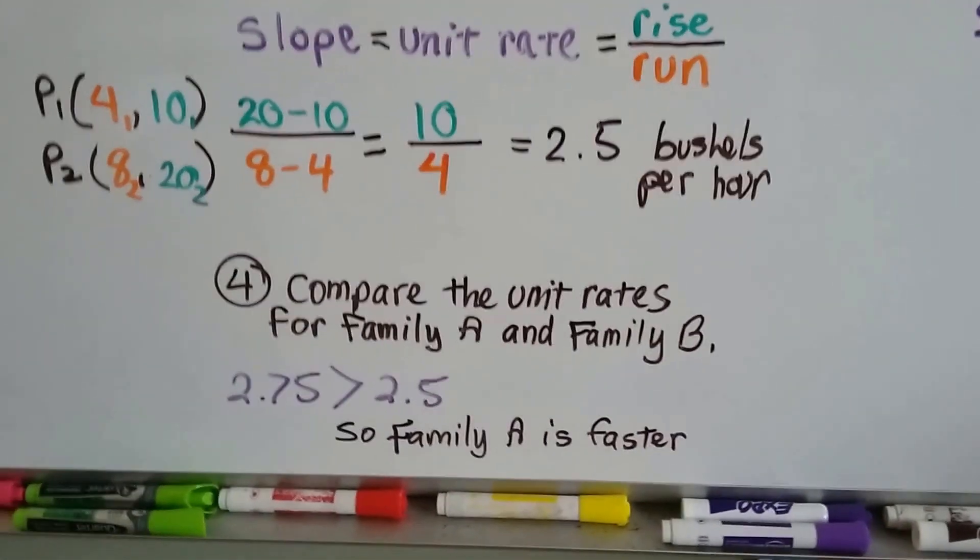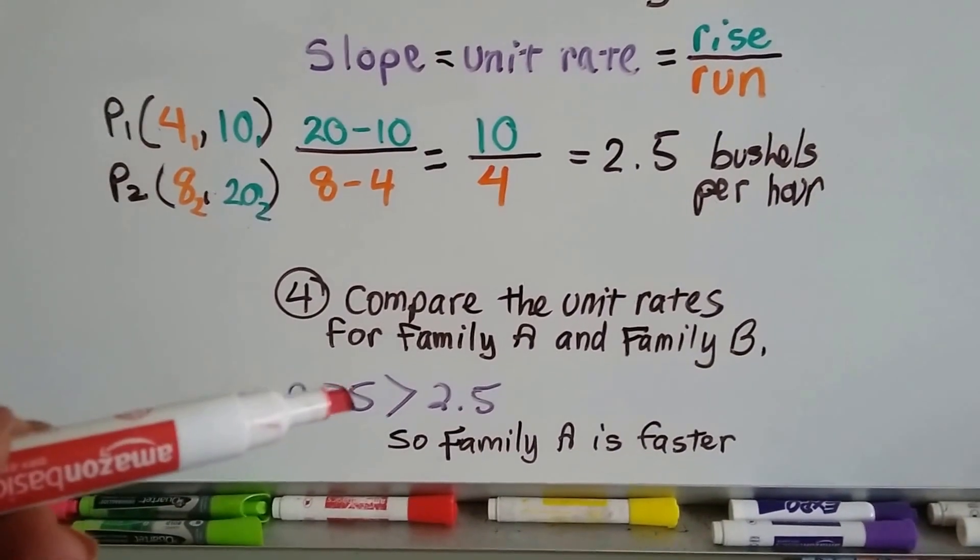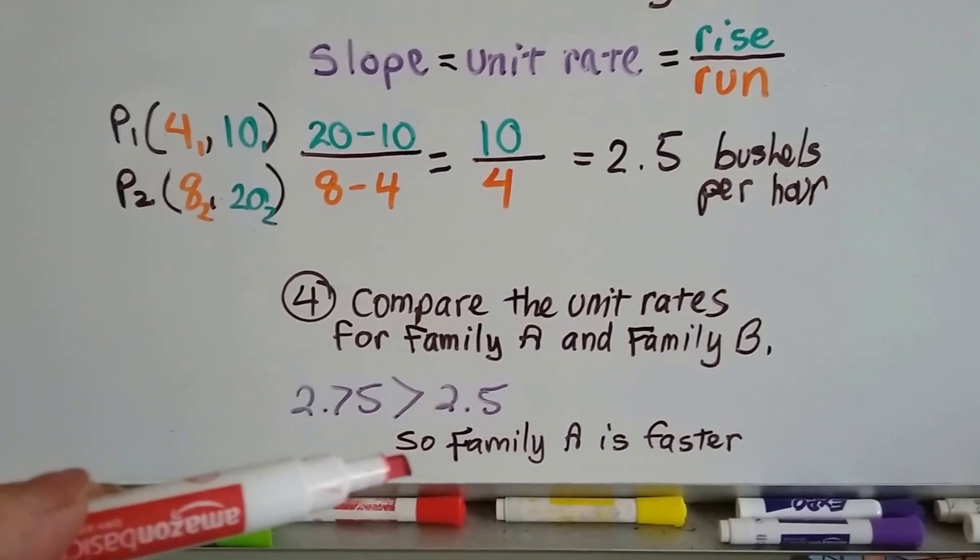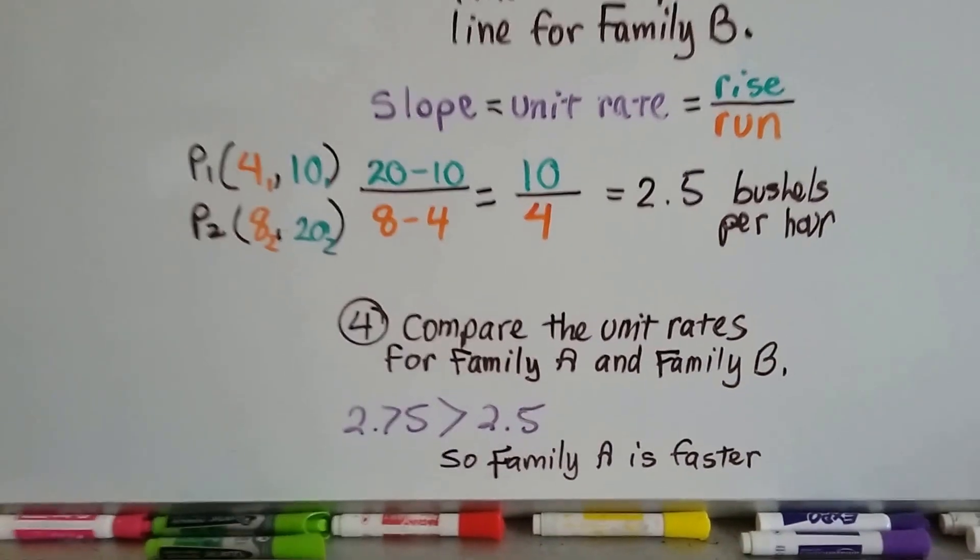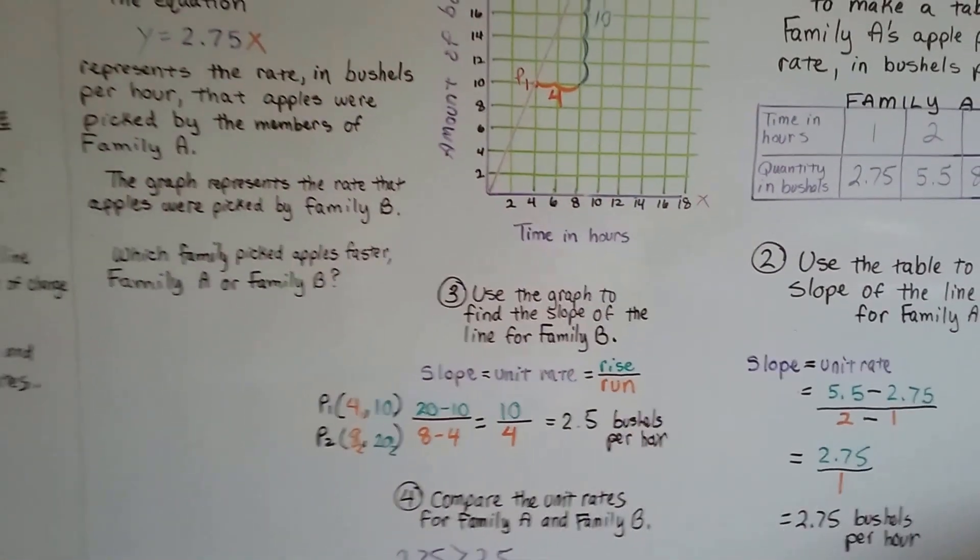When we compare the unit rates for family A and family B, we can see family A has got 2.75 and it's greater than 2.5. So family A is faster. They pick apples faster. Not a whole lot, but enough that they're winning.